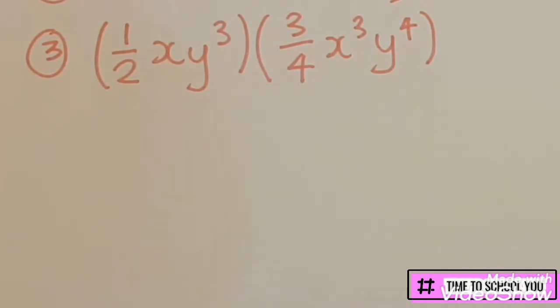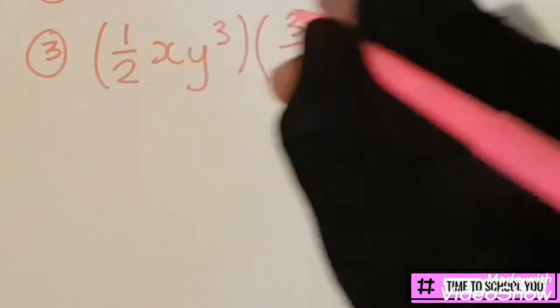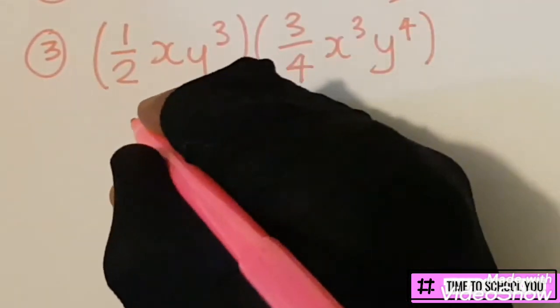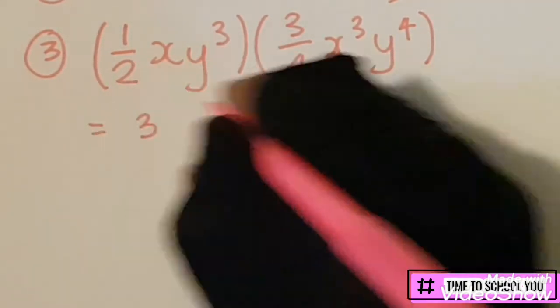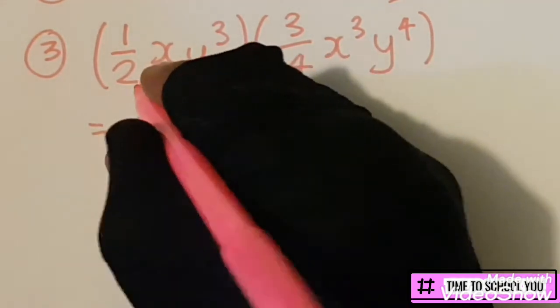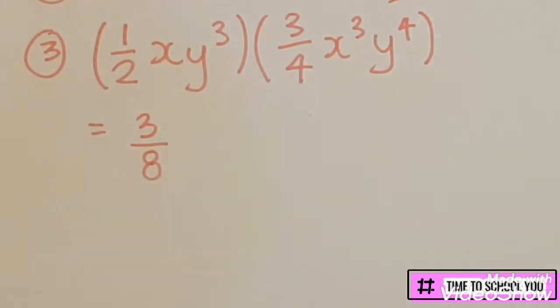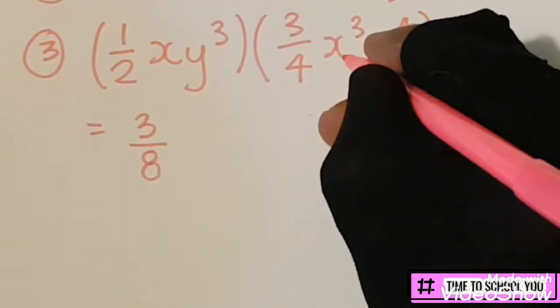So 1 times 3, remember we multiply the numerators, 1 times 3 is 3, and then we multiply the denominators, normal fractions from grade 7 work in grade 8. Two times four is 8.